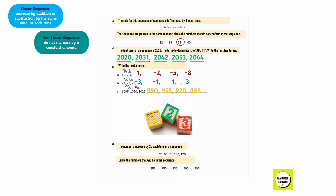Question number 6. Here is a part of a number sequence. The numbers increase by 25 each time: 25, 50, 75, 100, and 125. Circle all the numbers below that will be in the sequence: 750 and 900.